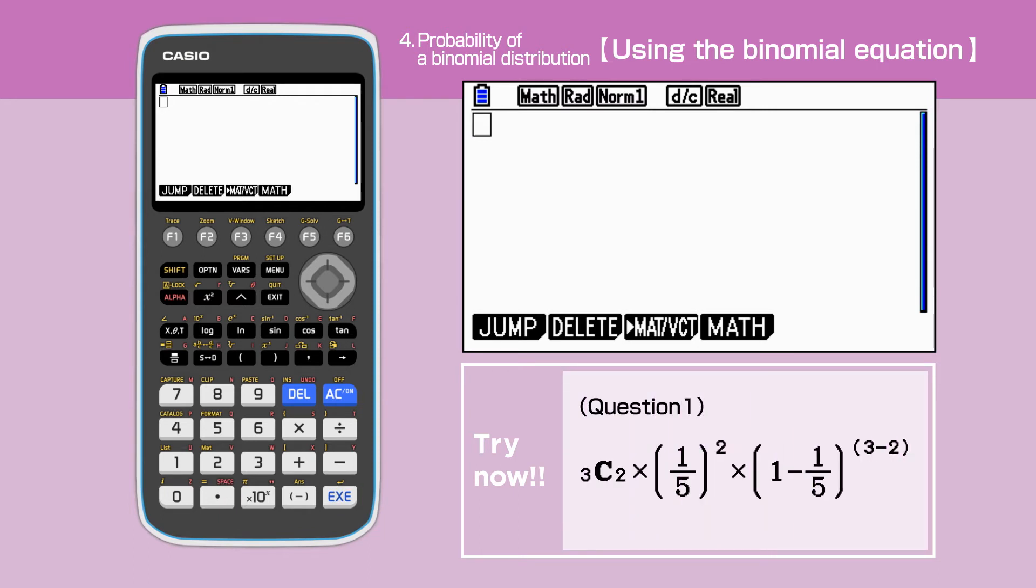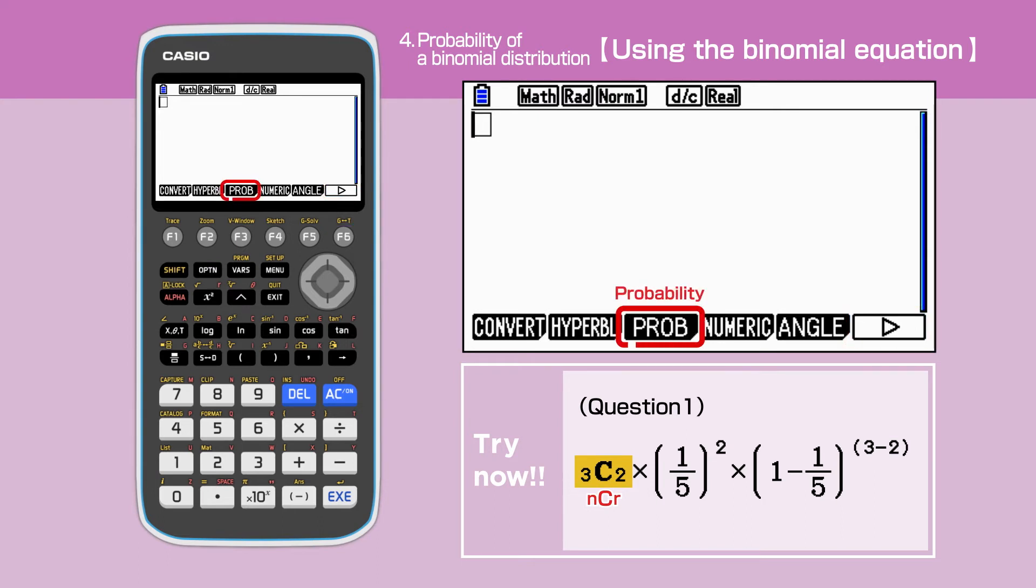We can work out the solution to the first question by entering 3 choose 2 times 1 over 5 squared times 1 minus 1 over 5 to the power of 3 minus 2 into the calculator. To find the NCR key, press option F6, then F3 probability.